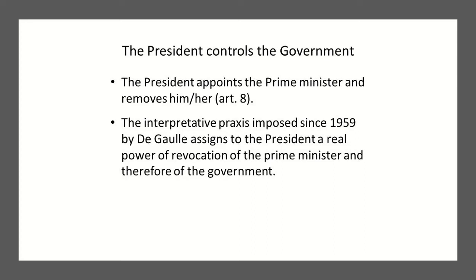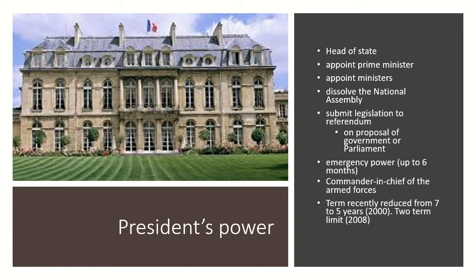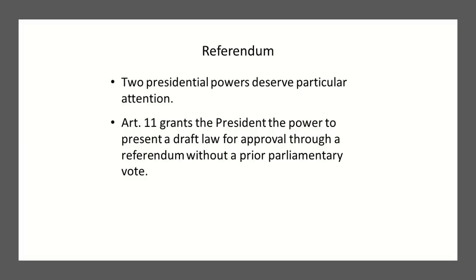The interpretive praxis imposed since 1959 by de Gaulle assigns the president real power of revocation of the prime minister and therefore of the government. To recap, the president — in this instance Macron — appoints the prime minister and ministers, can dissolve the National Assembly, can submit legislation to referendum, has emergency power of up to six months, and is commander-in-chief of the armed forces. His term was reduced from seven years to five years in 2000, and a two-term limit was established in 2008, for a total of ten years.